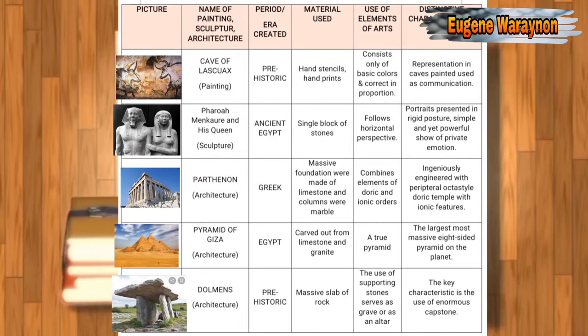Number one is Cave of Lascaux, a painting of the prehistoric era. The materials used are hand stencils and headprints. It consists of basic colors with correct proportion. Its characteristic is that it was painted in caves and used as communication. Next is Pharaoh Menkaure and his queen, a sculpture of ancient Egypt — a single block of stone that follows a horizontal perspective. Portraits are presented in rigid posture, simple yet powerful show of private emotion.